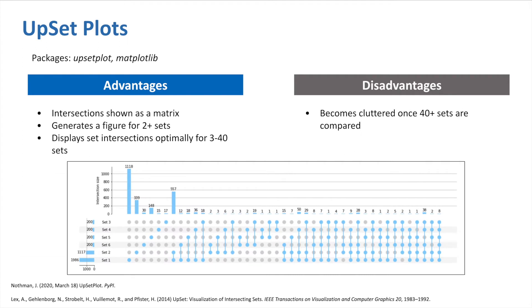Upset plots were created by Caleydo, which is a community of researchers from JKU Linz, University of Utah, and Harvard Medical School, to develop tools for biological data visualization. While Venn diagrams show intersections by overlapping shapes, upset plots display the information in a matrix format, where the filled-in circles represent the set intersections we are examining and the bars represent the cardinalities of the intersections. Upset plots best display the data when 3 to 40 sets are compared. Once we try to compare more than 40 sets, the upset plot can also become very cluttered.